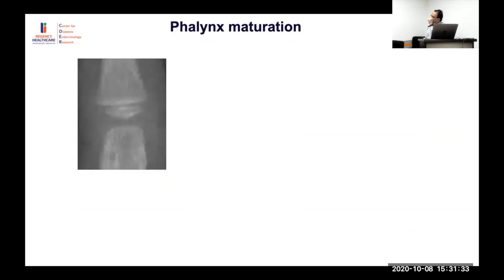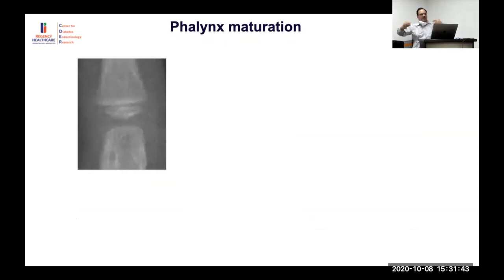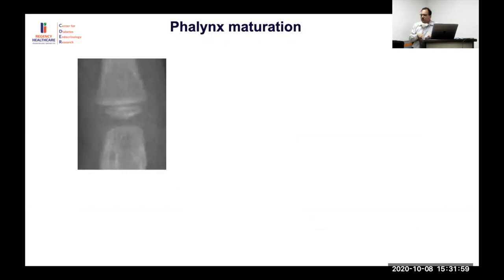Phalangeal maturation is the most important parameter to look at in bone age from around three to four years up to ten to twelve years. This is the clinically critical window. Out of five bone age sites found most effective in our analysis, three are phalangeal sites and two are radius and ulna.